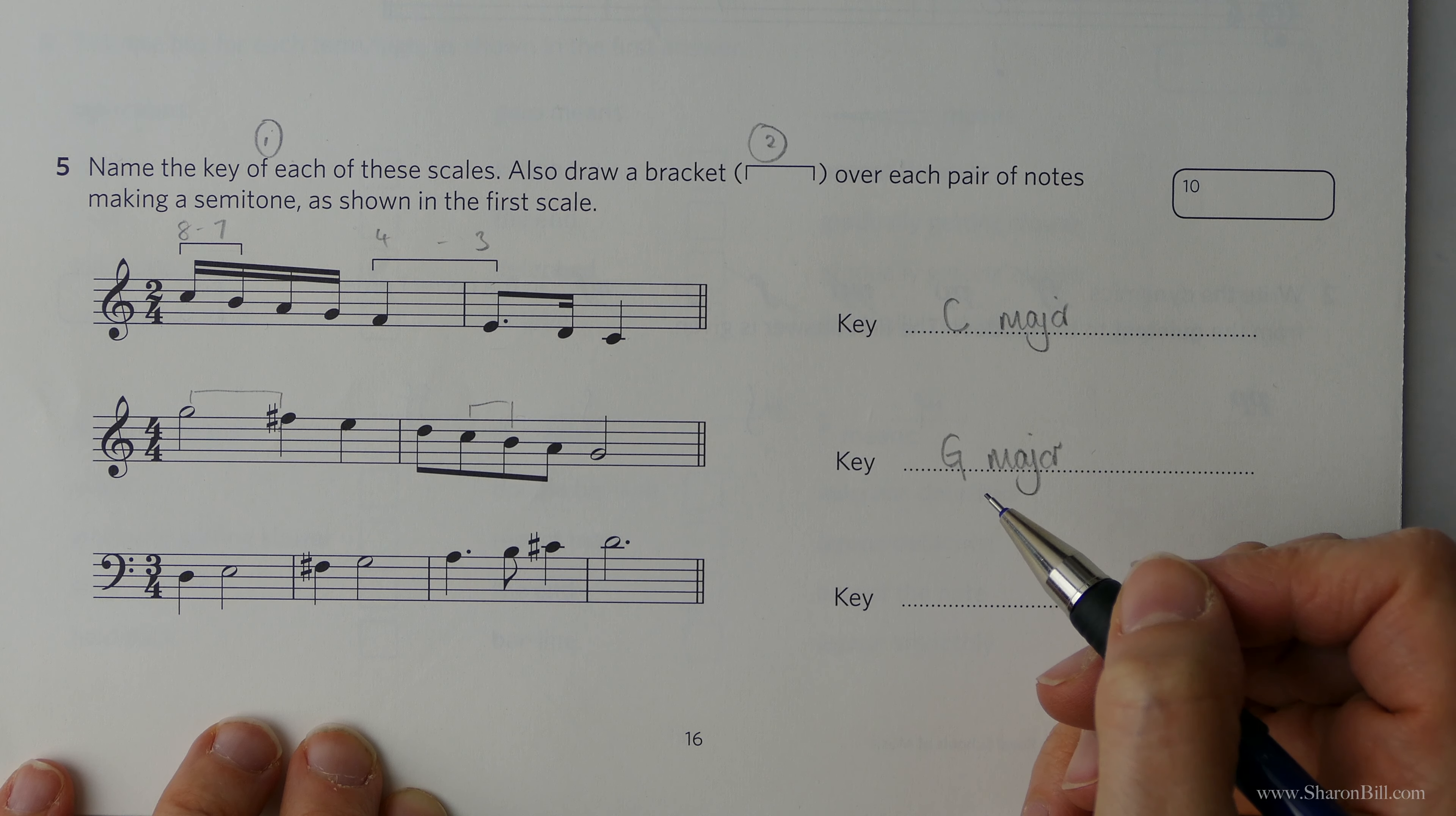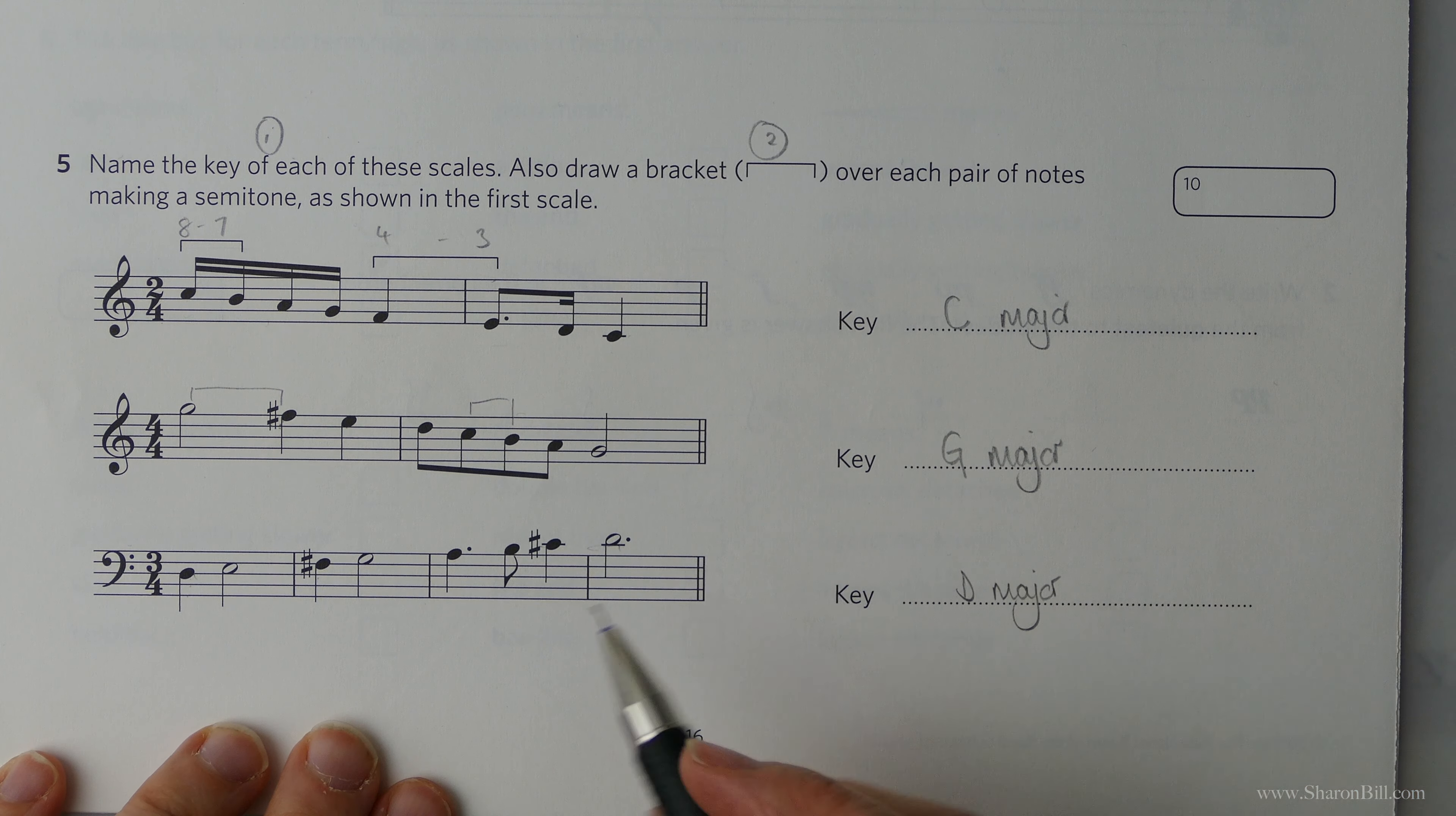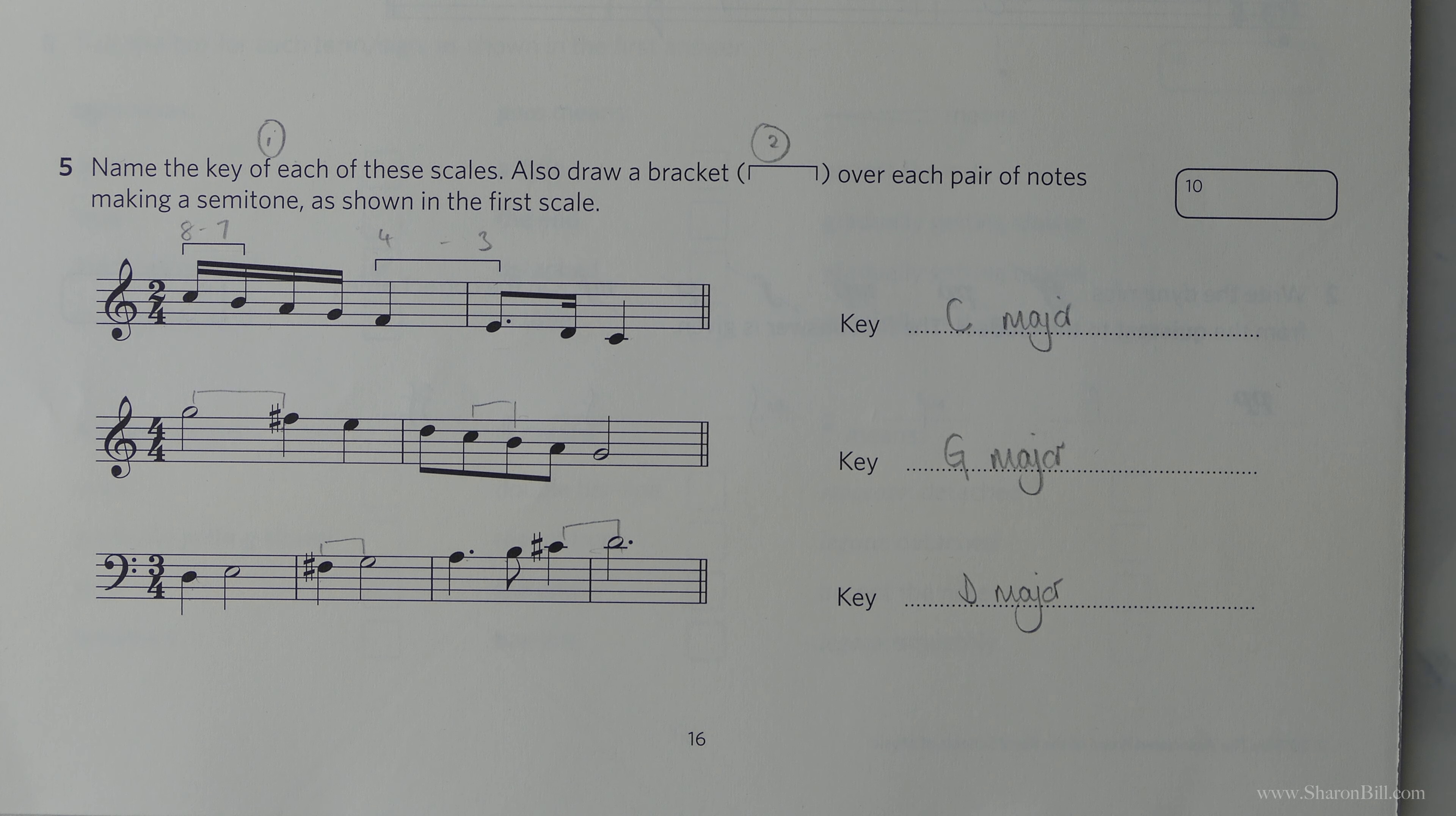And so this next one. So here we're in the bass clef, good boys deserve. It begins and ends on D. There's the D above middle C. And we know also that D major has F sharps and C sharps in the key signature. So we know that's correct on two counts. So it's D major. And then we know that the semitones are three to four, seven to eight. We're not going descending now. We're ascending. So we count upwards rather than backwards. One, two, three to four, five, six, seven to eight. There we go then. So that's the end of that question.